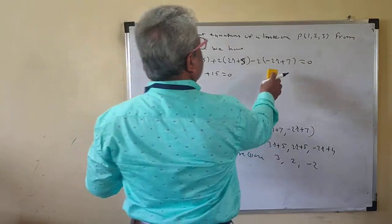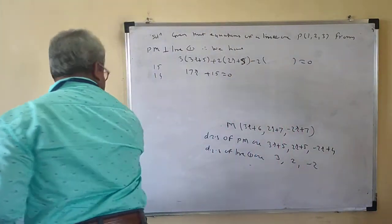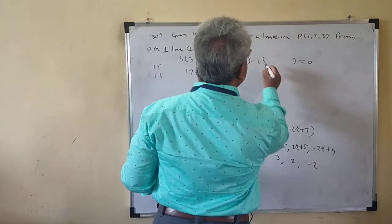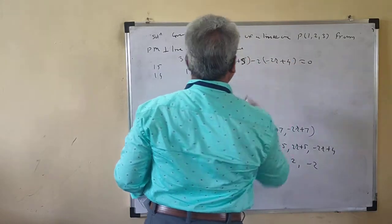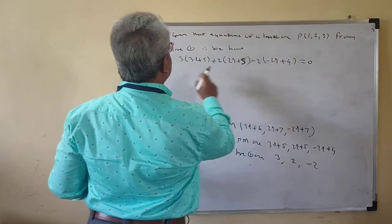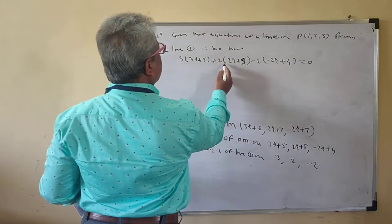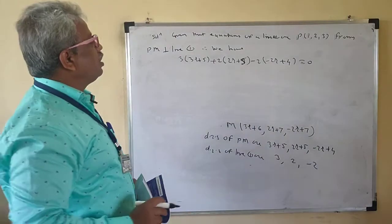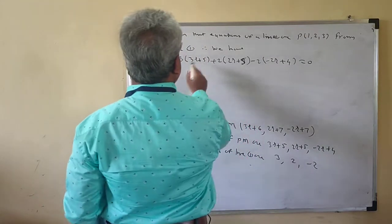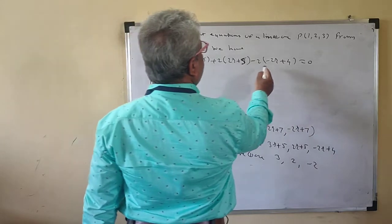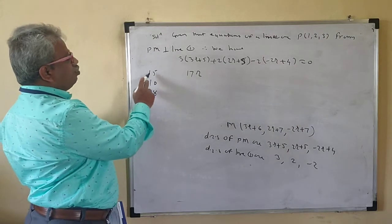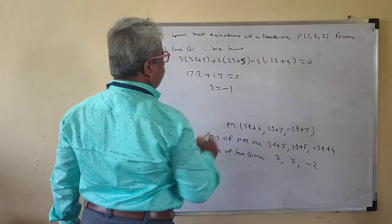Correction: the direction ratios of PM should be (3R + 5, 2R + 5, −2R + 4). So the equation is: 3(3R + 5) + 2(2R + 5) − 2(−2R + 4) = 0. This gives 9R + 4R + 4R = 17R, and 15 + 10 − 8 = 17. So 17R + 17 = 0, giving R = −1.